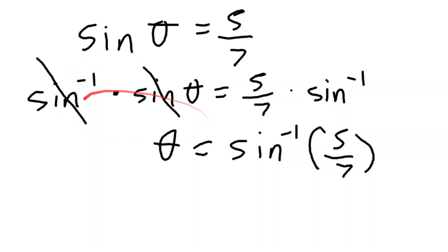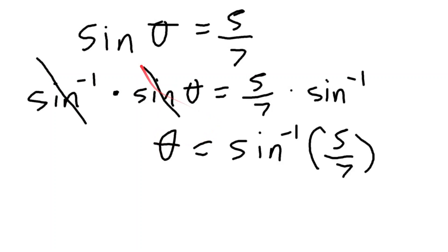You're probably wondering how the negative-1 thing works. Suppose we have sine theta equals 5 over 7. We multiply both sides by sine to the negative 1 power — the inverse of sine — and on the left side sine and sine-to-the-negative-1 cancel out, leaving theta alone. So theta equals sine to the negative 1 of (5 over 7).